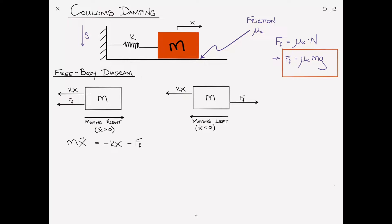Rearranging: MX double dot plus KX equals minus F sub F. This looks very similar to the simple harmonic oscillator — it just looks like an external force being applied, not altogether different from the gravitational effect case.